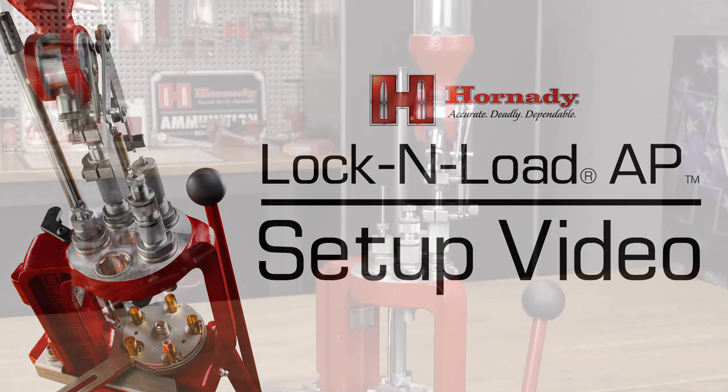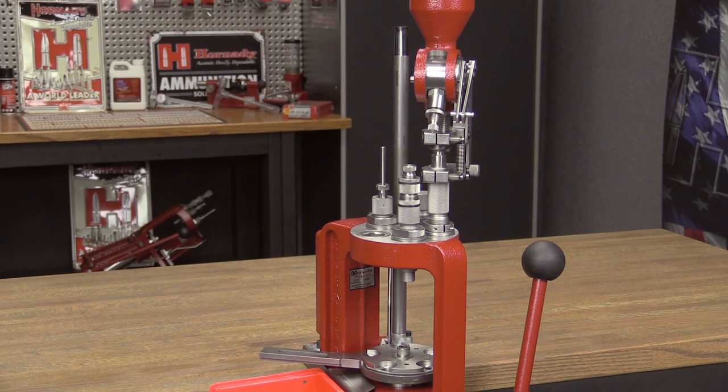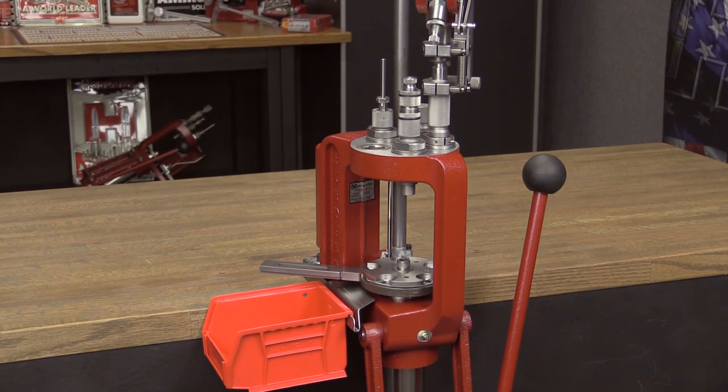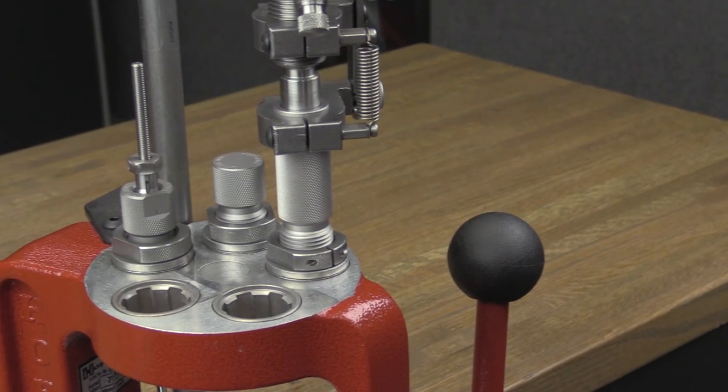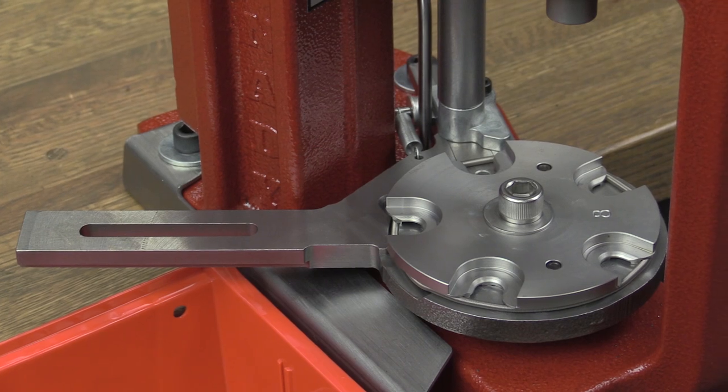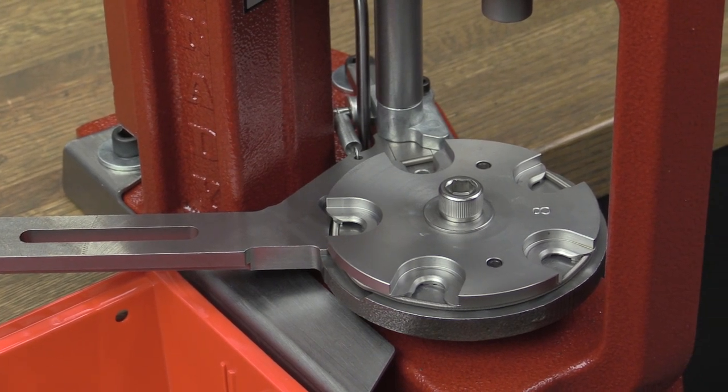The Hornady Lock and Load AP Reloading Press is a professional-grade, auto-indexing, five-station progressive press that features the patented Lock and Load bushing system, as well as a host of other features that make it more intuitive and better equipped for all your reloading needs.